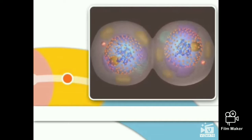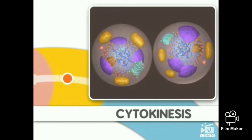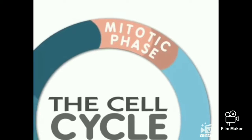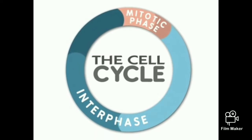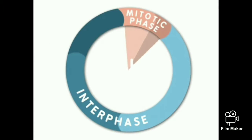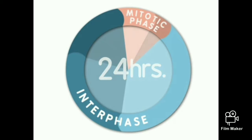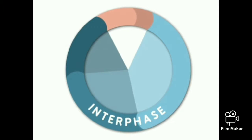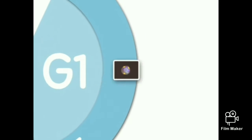After mitosis, two new cells are formed by a process called cytokinesis. Mitosis is only one part of what is called the cell cycle. For many eukaryotic cells, a cell is duplicated every 24 hours. Most of the life of the cell is spent in interphase. Interphase consists of three stages called G1, S, and G2.